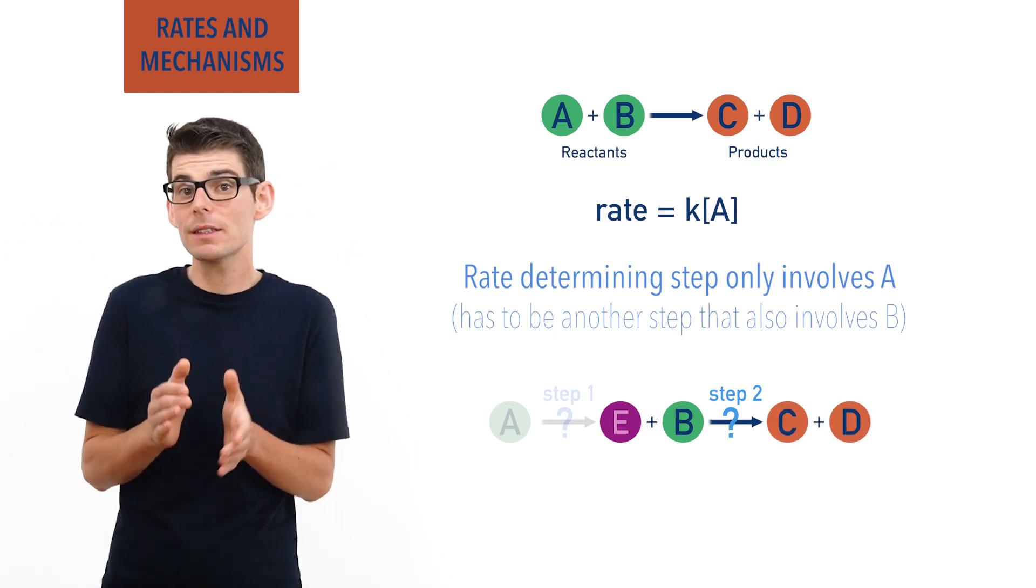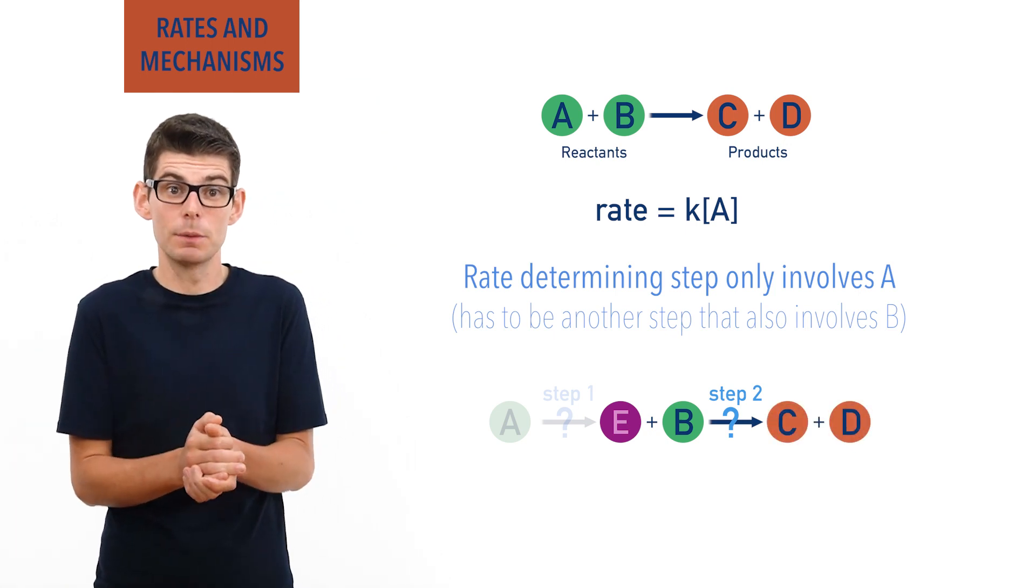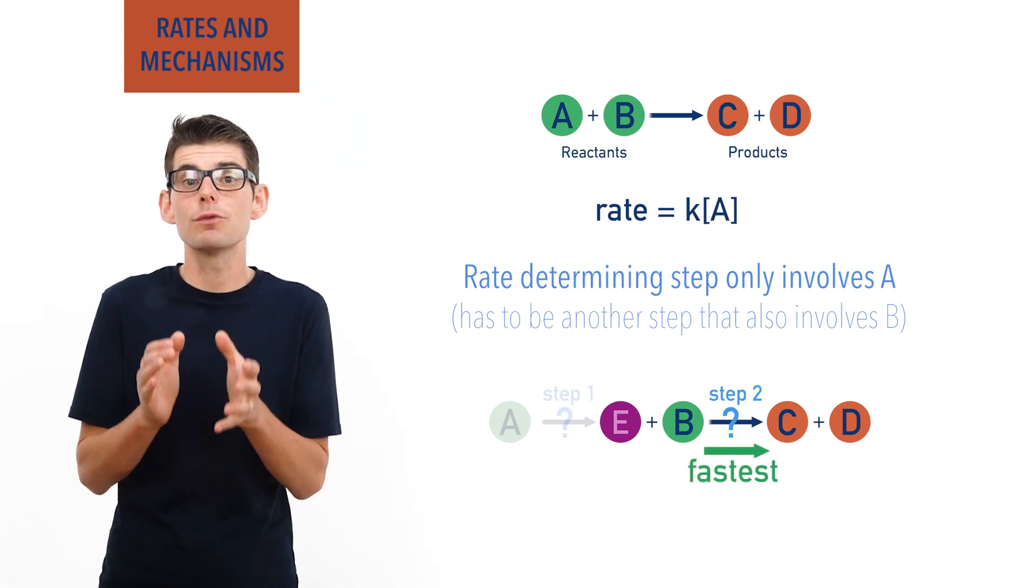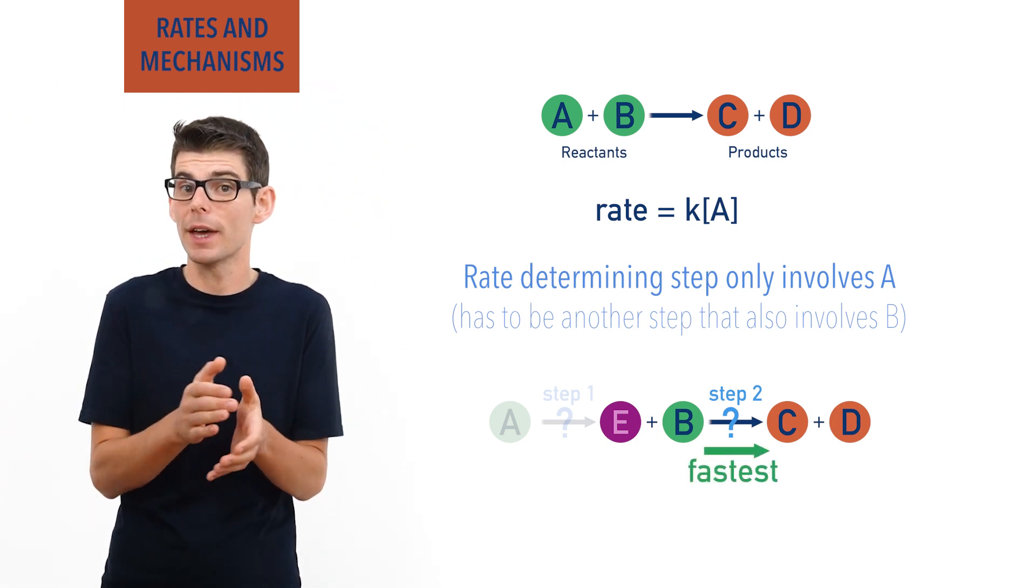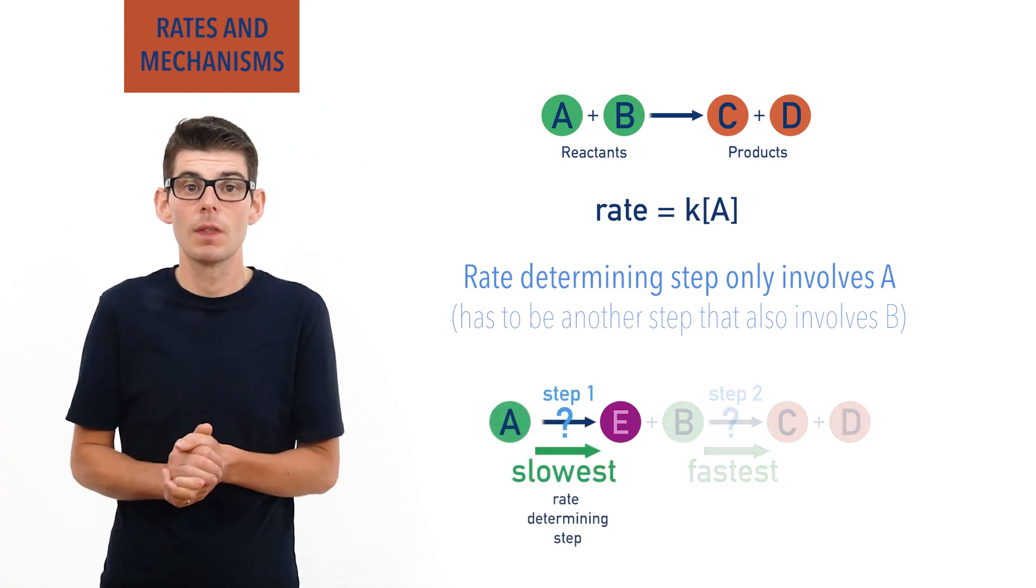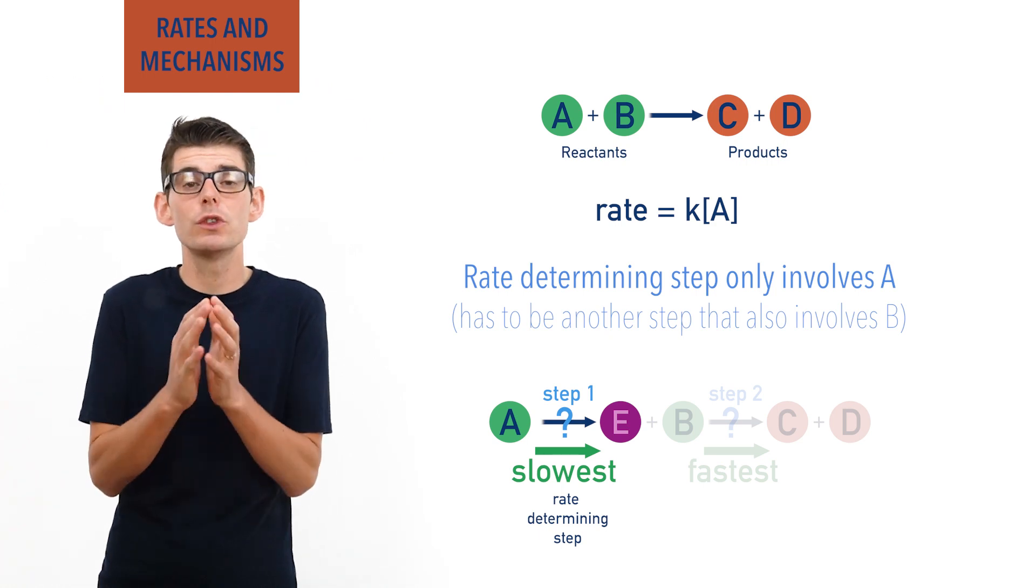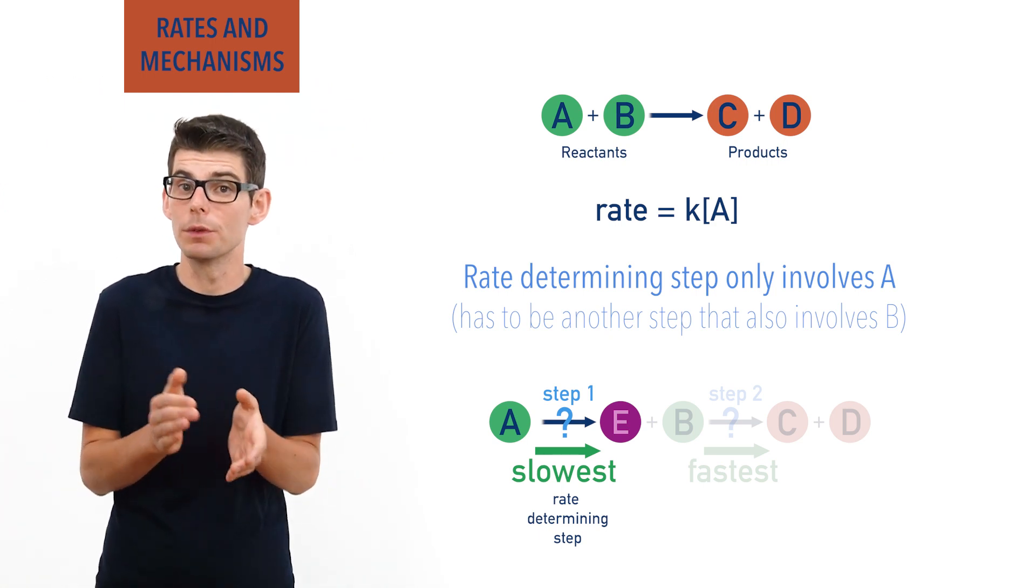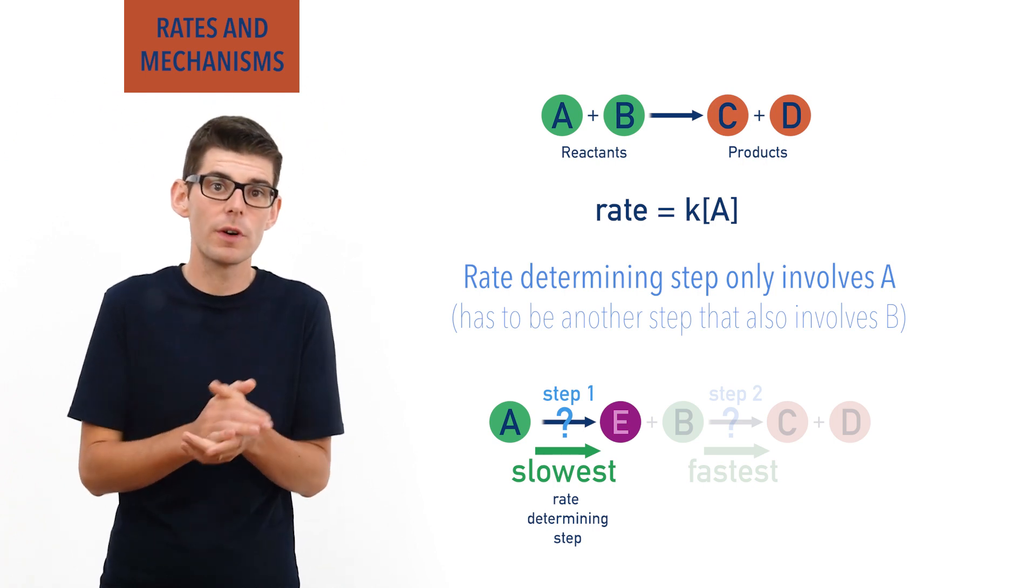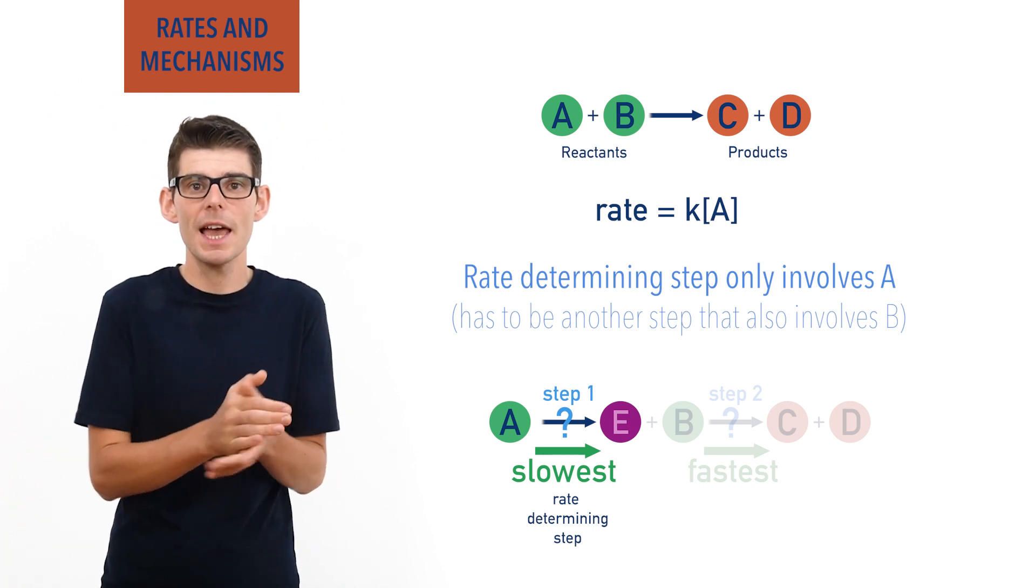The second step, intermediate E reacting with reactant B, must be the fastest step as the rate equation only includes reactant A, which would mean step one is the rate determining step. The concentration of B has no impact on the rate of the reaction, meaning the step involving B must be much faster than the step involving A.